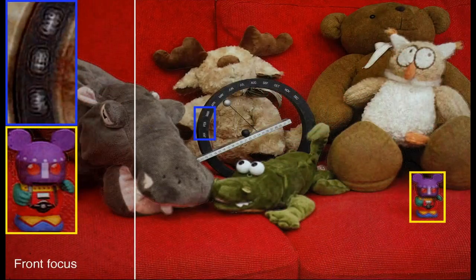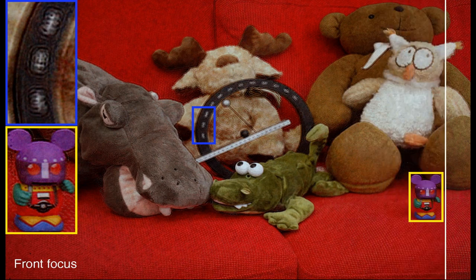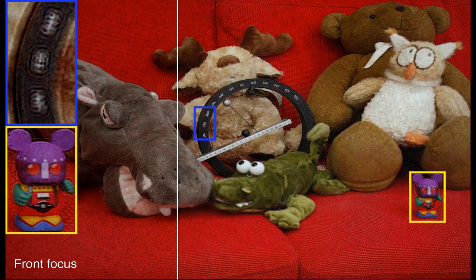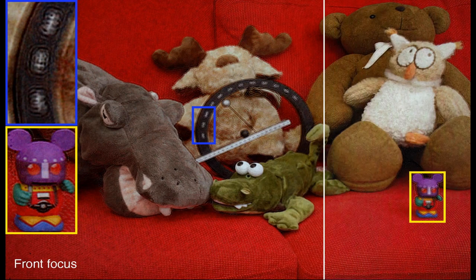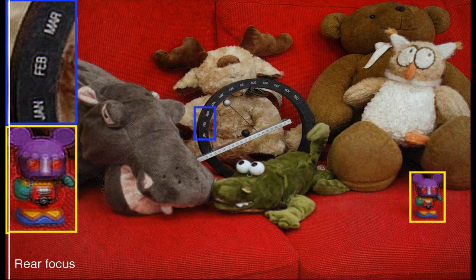For this 3D couch hologram, we toggle between two photographs captured by setting the camera focus on the mouse toy and the perpetual calendar. Note how one of the magnified insets goes out of focus when the other comes into focus.